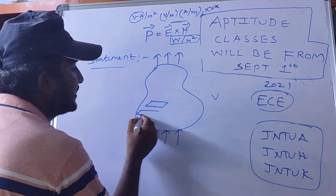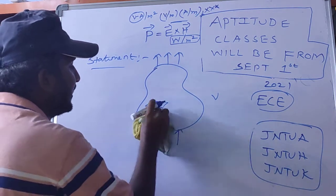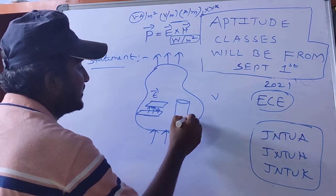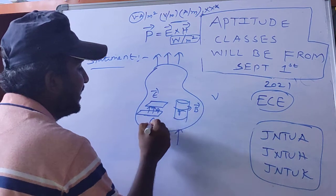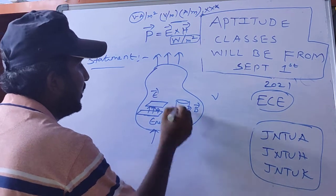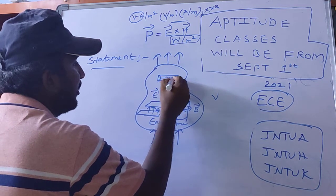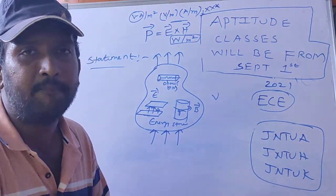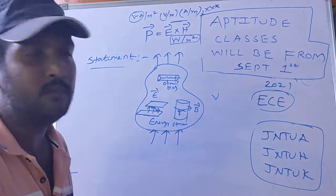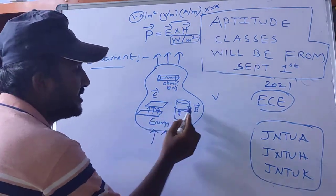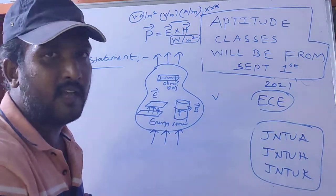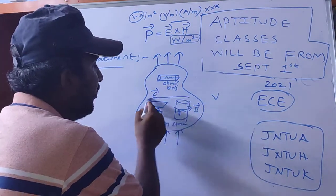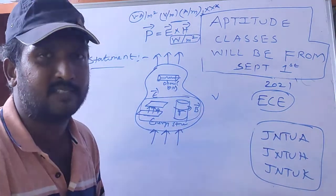...the time rate of energy stored within the volume minus ohmic losses. Here, the energy stored includes both electrical energy and magnetic energy. The net power flowing out of a given volume equals the time rate of energy stored within the volume minus ohmic losses. This is the statement of Poynting theorem.